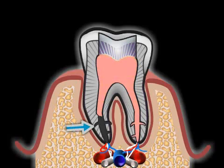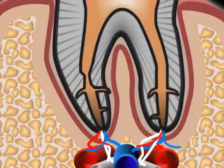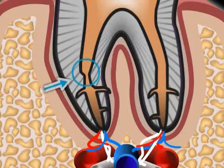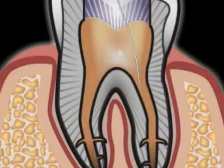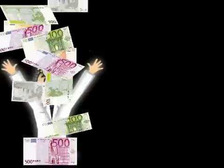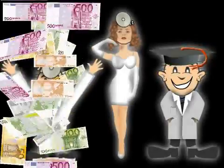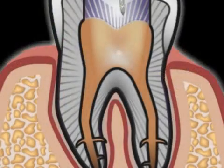The reasons for not filling down to the tip of the root are manifold: severely curved canals, the breaking of a root canal instrument, an unmotivated practitioner, an unskilled practitioner, or an inexperienced practitioner.